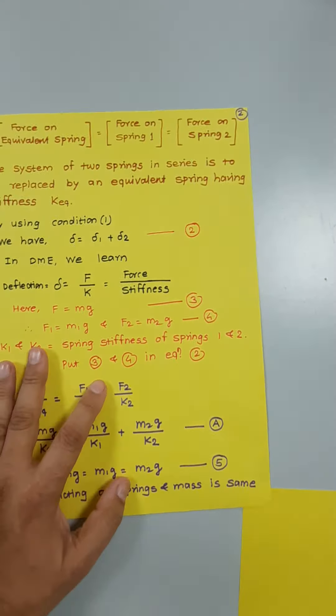The second condition states that the force on the equivalent spring equals the force on spring one, which equals the force on spring two. The force taken by spring one equals the force taken by spring two, which equals the force taken by the equivalent spring — meaning the force acting on all springs is the same. The two springs in series are to be replaced by an equivalent spring with stiffness k equivalent.